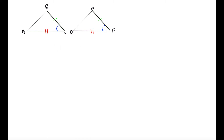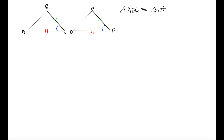For our next rule — the side-angle-side rule — if we have two triangles that have two side lengths that are equal and the angle created by those two sides is also equal, the triangles are congruent. The angle must be the included angle between the two equal sides. We can see BC equals EF, AC equals DF, and angle C equals angle F — the angle created by those two sides. So triangle ABC is congruent to triangle DEF because two sides and the included angle are equal.